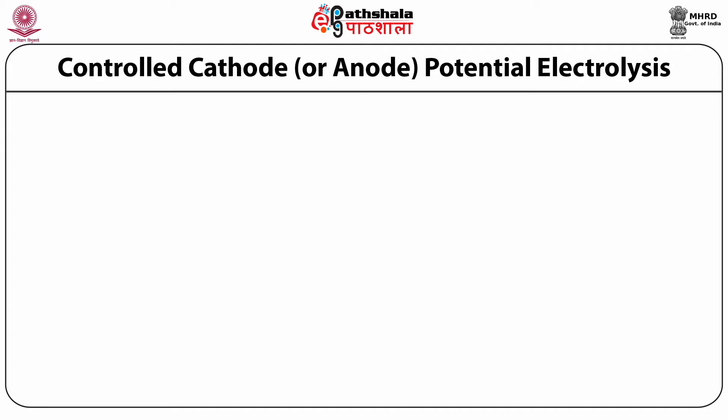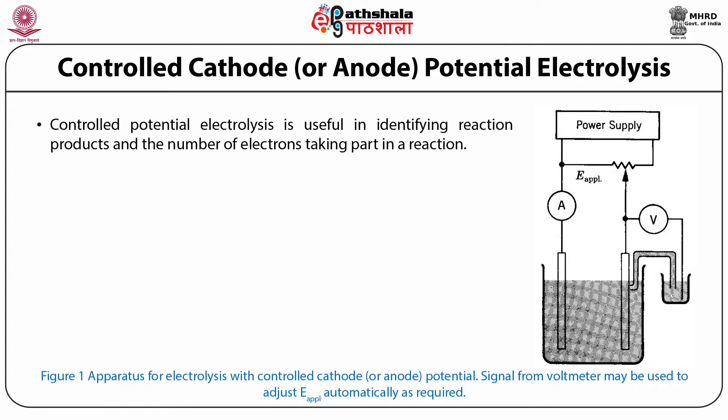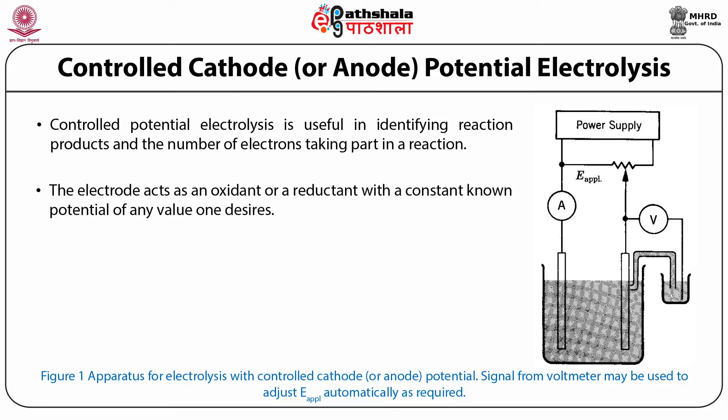In addition to analytical applications, controlled potential electrolysis is useful in identifying reaction products and the number of electrons taking part in a reaction. The method also serves as a preparative tool. The electrode acts as an oxidant or reductant with a constant, known potential of any value one desires, and some preparations for which no suitable chemical agents are available can be easily carried out.